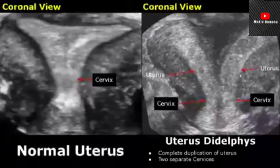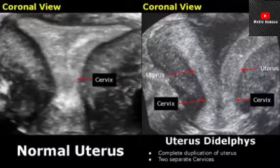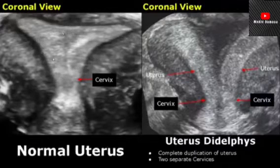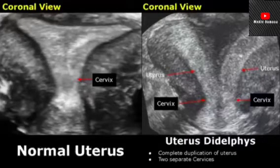These are 3D reconstructed coronal images of the uterus. This view is best for diagnosing congenital uterine malformations. This is how a normal uterus looks in a coronal 3D ultrasound image, and here we have two separate uteri showing complete duplication of the uterus and cervix.